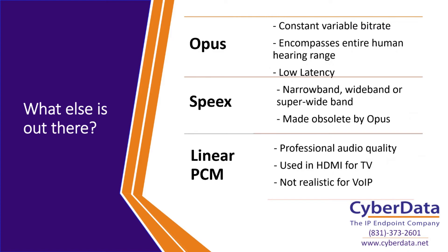The formerly better option — still a really good option — is the Speex audio codec. This one has selectable options featuring the big three: narrowband, wideband, or super wideband, so you can pick and choose what band to work in to maintain the best audio quality. But with Opus being as good as it is, the Speex guys have even said on their website, 'Don't use Speex — Opus is better and it's free.' So Opus has really become the big market shaker. But Opus, as good as it is, still is not the best.